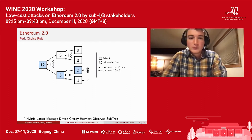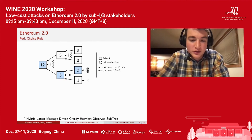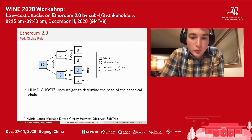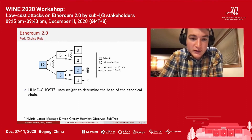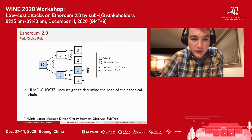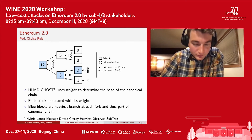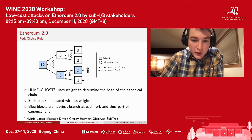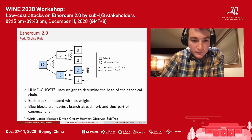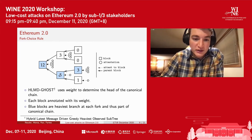The fork choice rule, called HLMD Ghost, operates as follows. It uses weight to determine the head of the canonical chain, where weight is defined as the number of attestations to that block itself or to one of its children blocks. The Ghost rule operates by taking the heavier fork at each branch — for example, at a branch between five and three, five is chosen. This pattern continues until a leaf block is reached — a block with no children — and that block is seen as the head of the canonical chain, represented by the blue blocks.